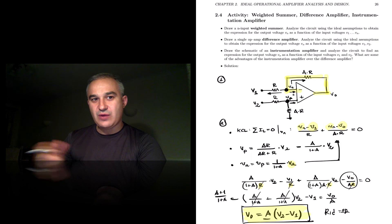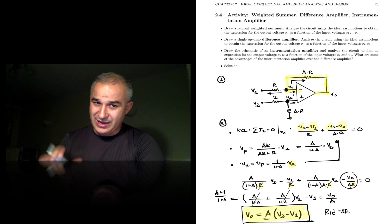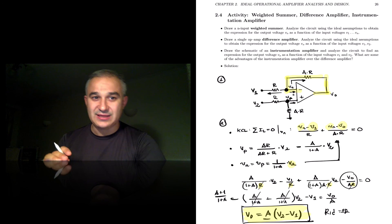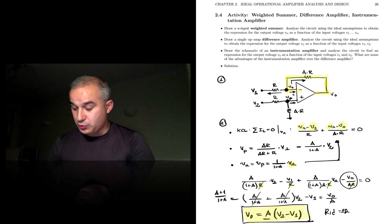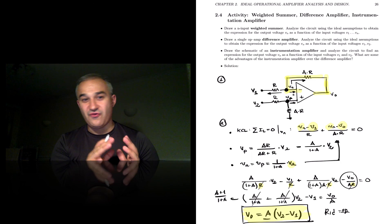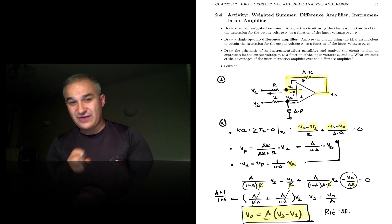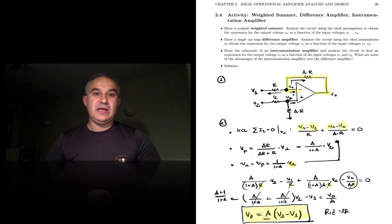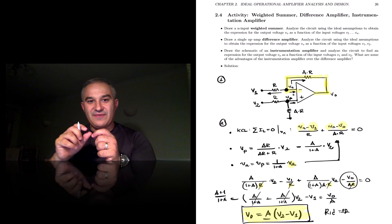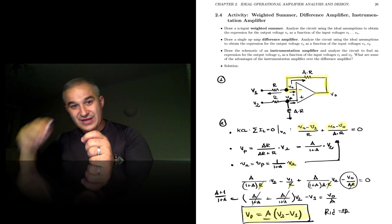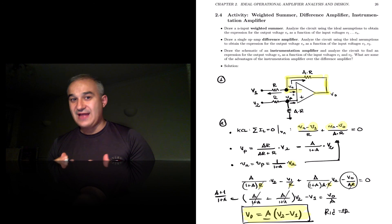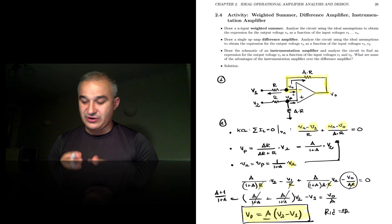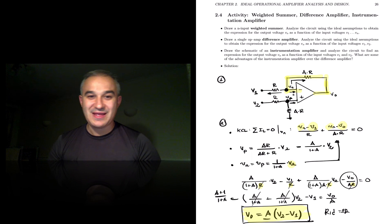We are going to see how we can improve the common mode rejection ratio and how to create a better circuit to amplify the difference between two inputs. This appears in the front end of many sensing applications — you have a transducer or two transducers, and you want to amplify the difference between those and reject the common signal. For that, the instrumentation amplifier is a very good choice. Thank you.